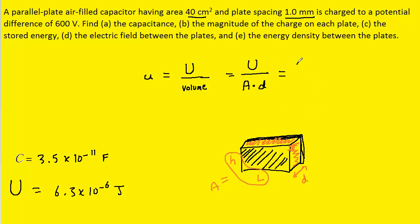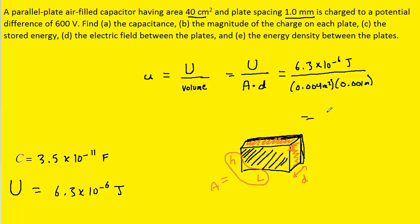We plug in the energy computed earlier, divide by the area we found earlier, and then by the plate separation — using standard units throughout. When we compute that, we get 1.6, and the units are joules divided by meter squared times meter, which becomes joules per meter cubed. So this is the correct answer to part E.